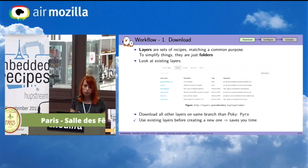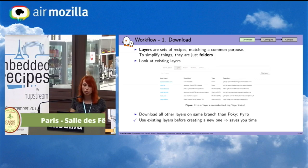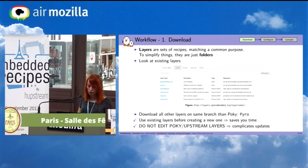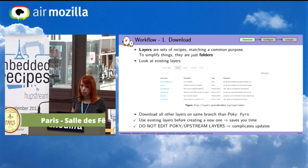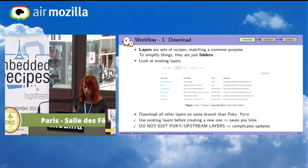When you download a layer, use the same branch that you use for Poky. This is the first good practice: use existing layers before creating a new one — it will save you time. When you want an application for your board, check that website first to see if there is already a layer that provides it. And importantly, do not edit Poky or upstream layers, as it complicates updates.